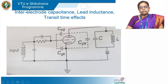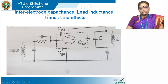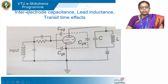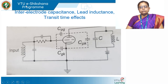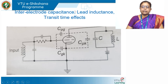These capacitances which come up at high frequencies are called inter-electrode capacitances. 'Inter' means between — it is between two electrodes that the capacitance forms. So this is the effect of inter-electrode capacitance at high frequencies.